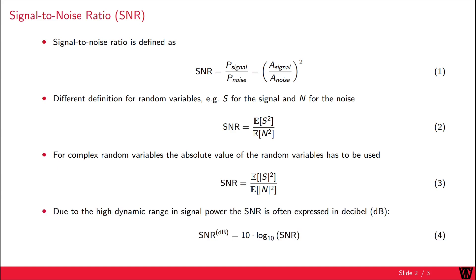Due to the high dynamic range of the signal power, the signal power itself and consequently the signal-to-noise ratio is often expressed in decibel.